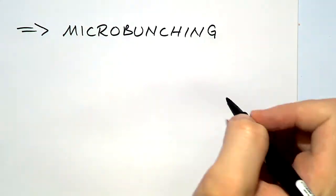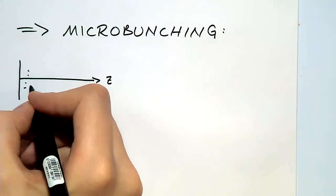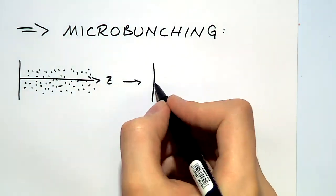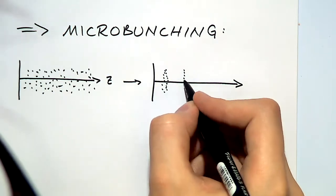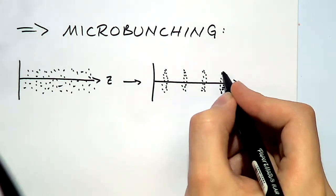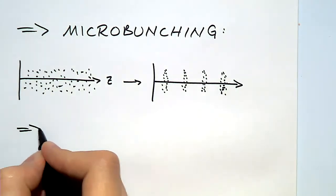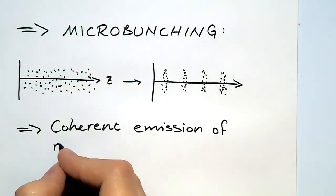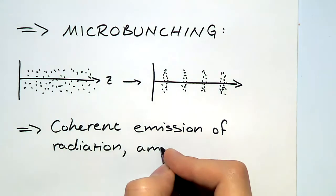This now results in what is known as micro-bunching. Initially the electrons are uniformly distributed inside the particle accelerator, but as a result of this drift in the ponderomotive phase, we get these tight bunches of electrons separated by the characteristic wavelength of the free electron laser.